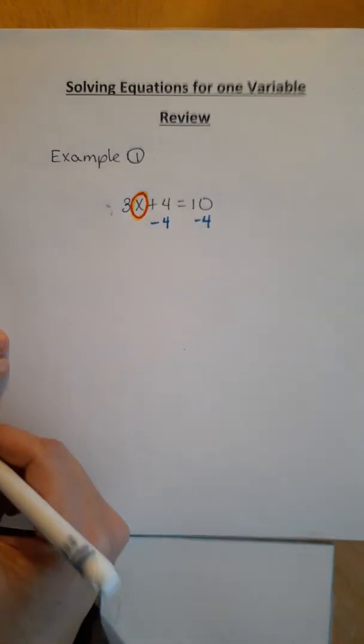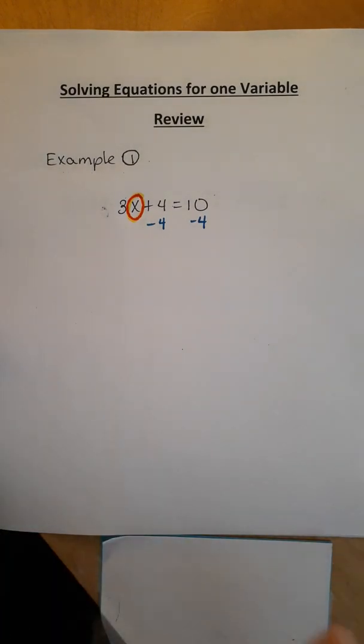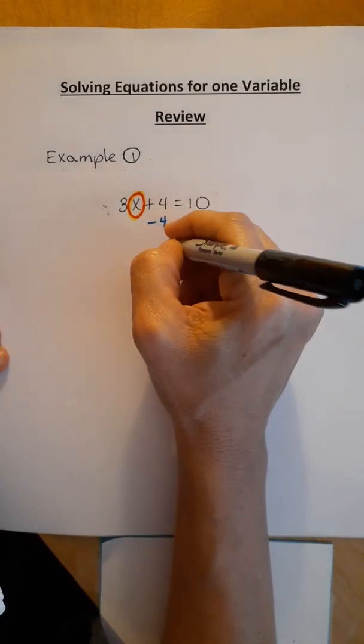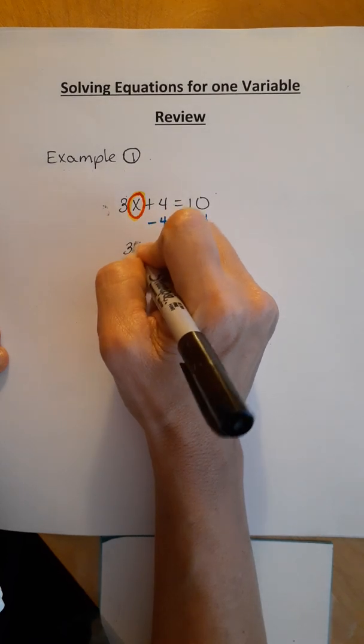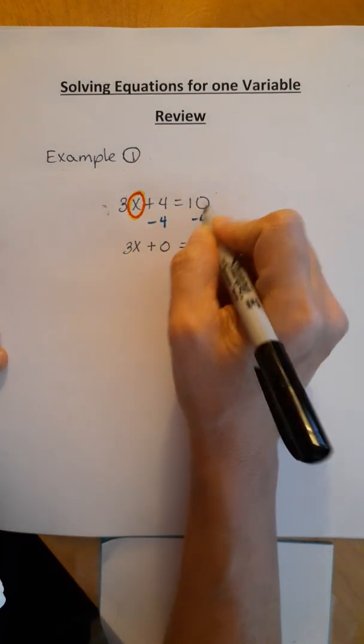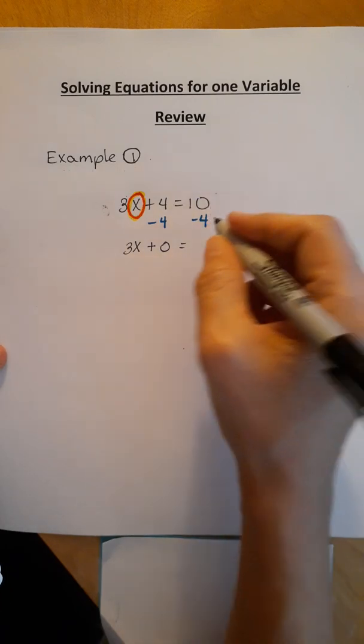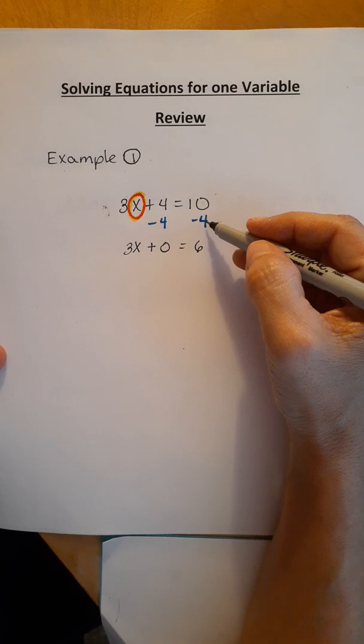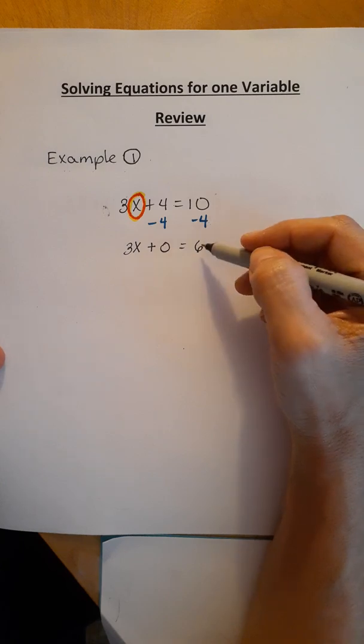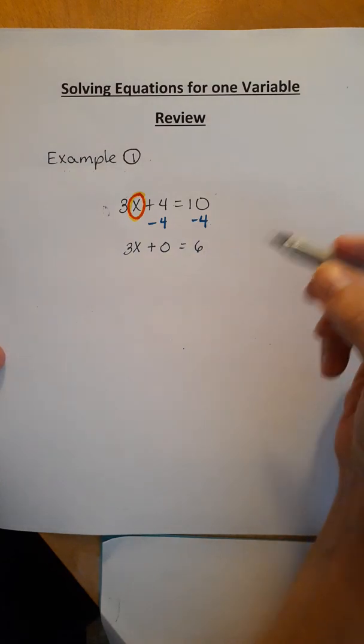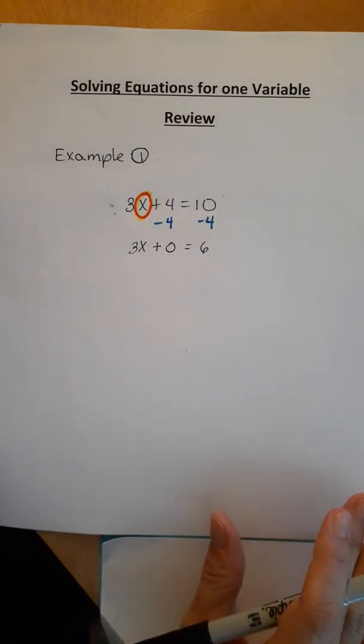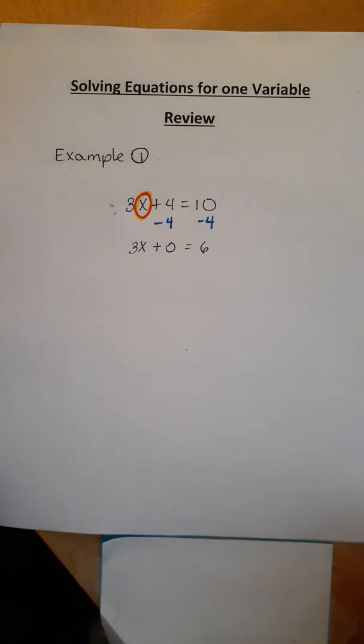When I do that, I get 4 take away 4 is 0, and then 3x plus 0 equals 10 take away 4. 4 subtracted from 10 is 6. I always like to think of it as if I have $10 and I owe $4. If I pay my debt, I have $6. That's kind of a trick I use in my classes because when you start to work with negatives and positives, it makes life a little easier.